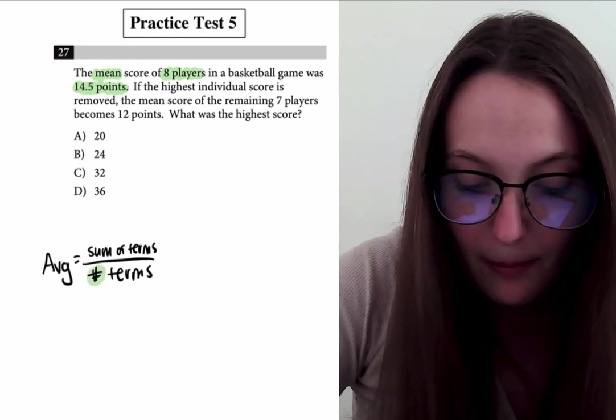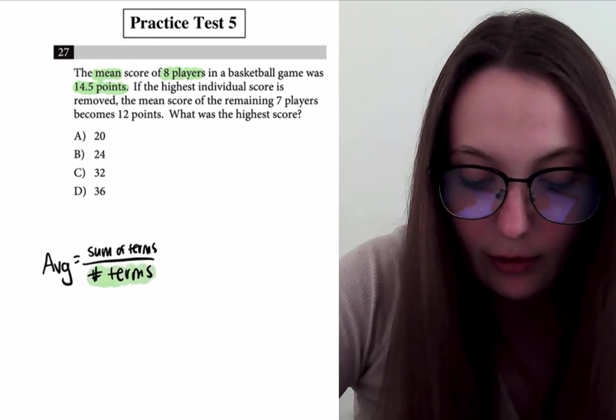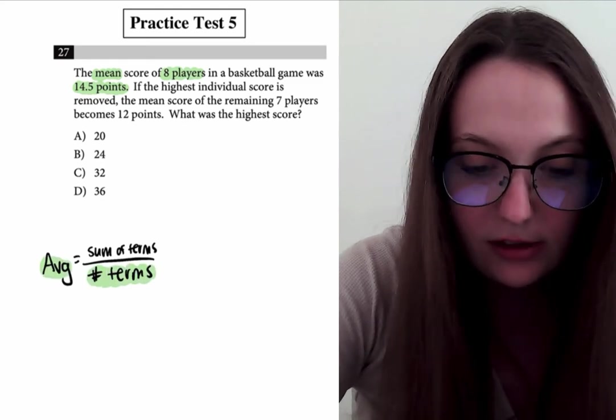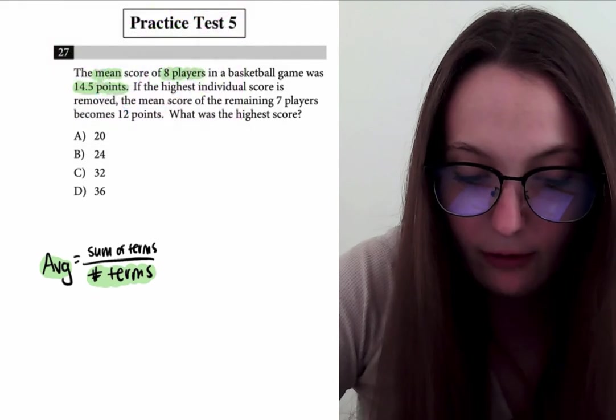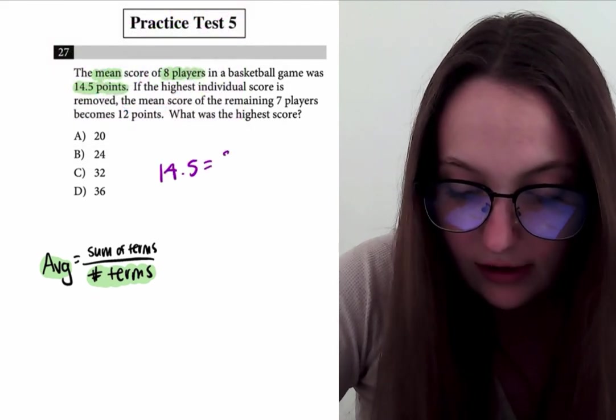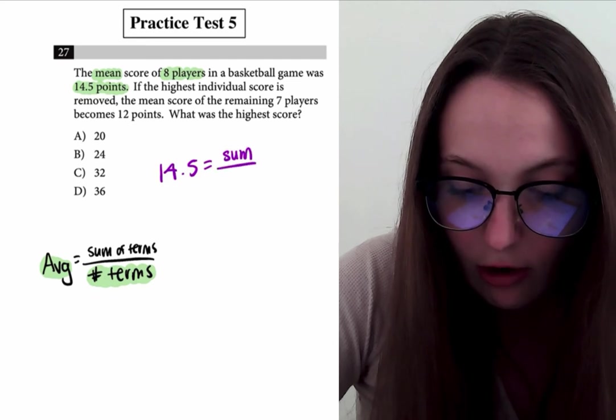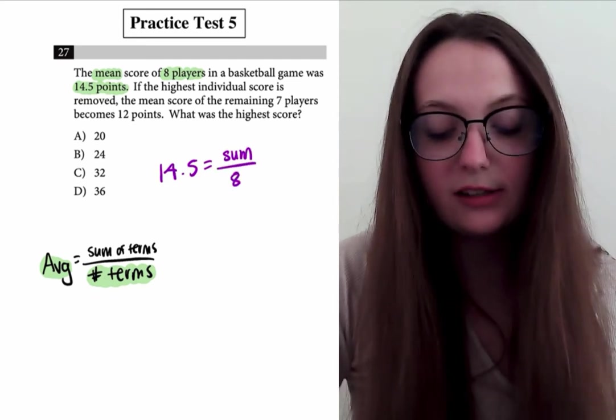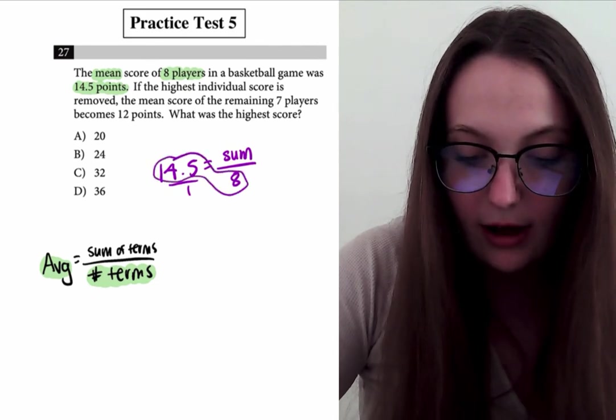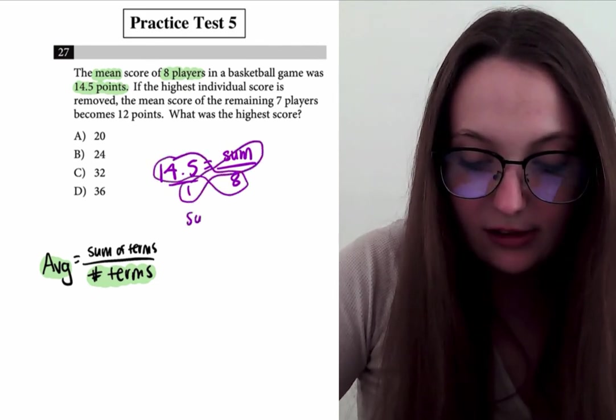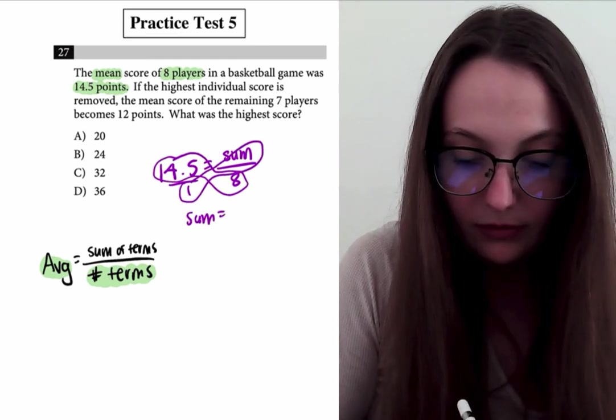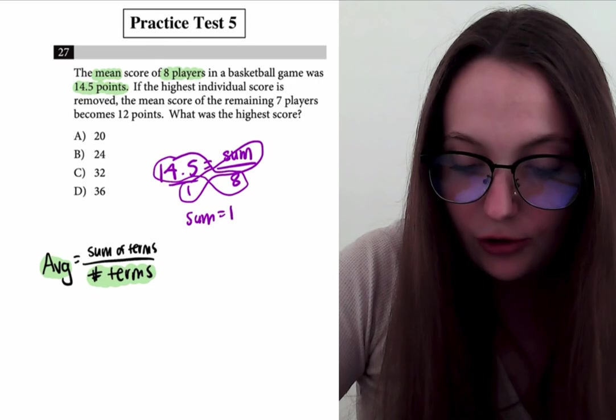We know the mean of the eight players was 14.5. So we know the number of terms, which here is eight. We also know what the average is, so we can plug that in to find what the sum would be. So 14.5 equals the sum over eight. We can find what the sum is by cross multiplying, so the sum equals 14.5 times eight, which is 116.